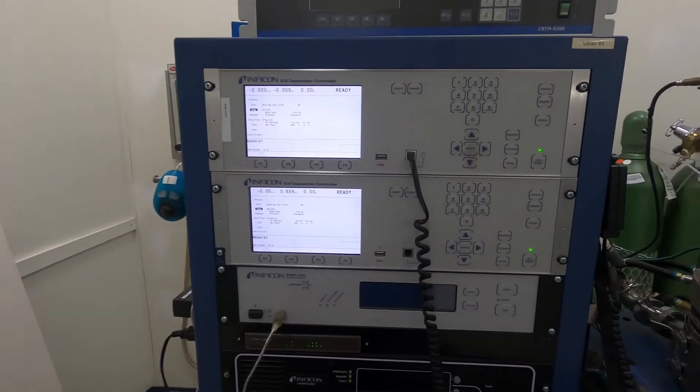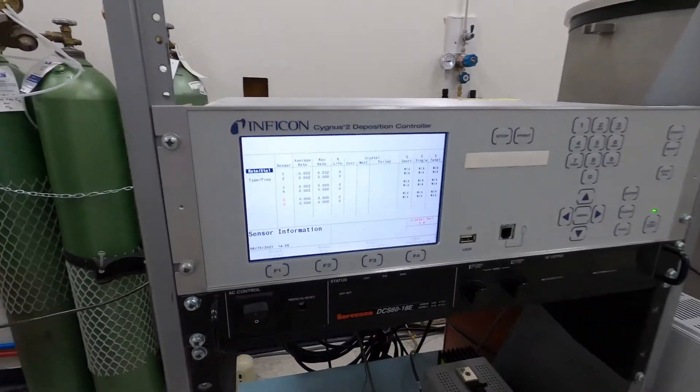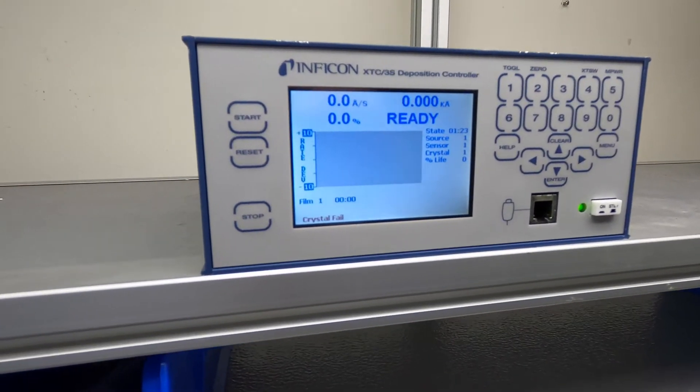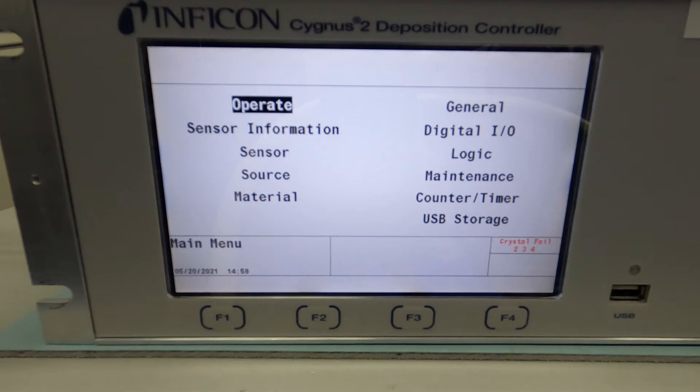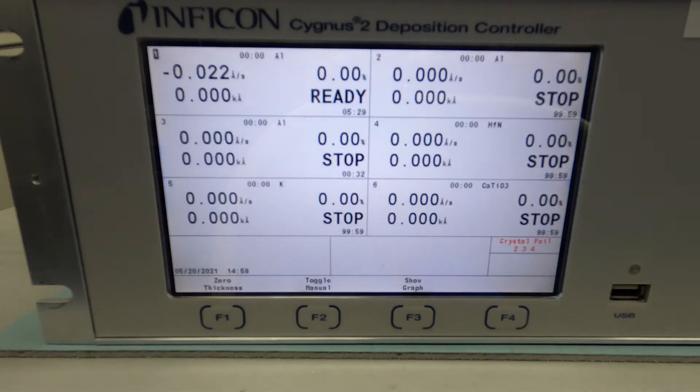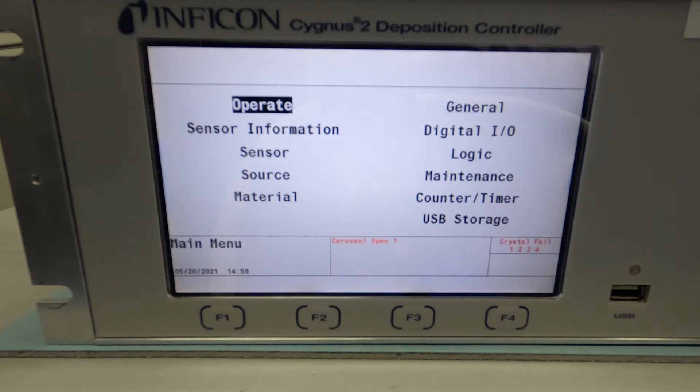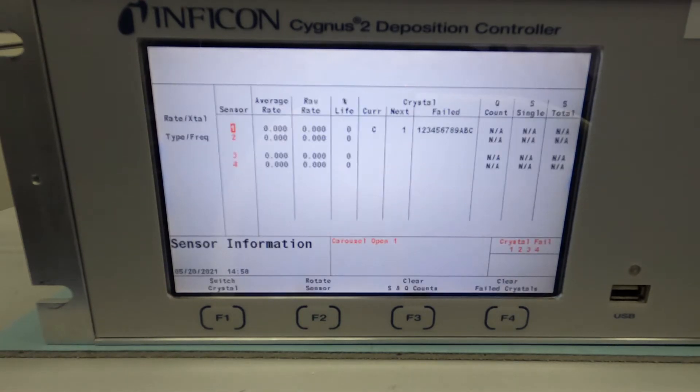Inficon deposition controllers such as the IC6, Cygnus 2, or XTC 3 with position feedback will automatically detect when a carousel is removed and display a carousel open message on the operating screen. When a carousel changeout occurs, all crystals will be identified as failed.